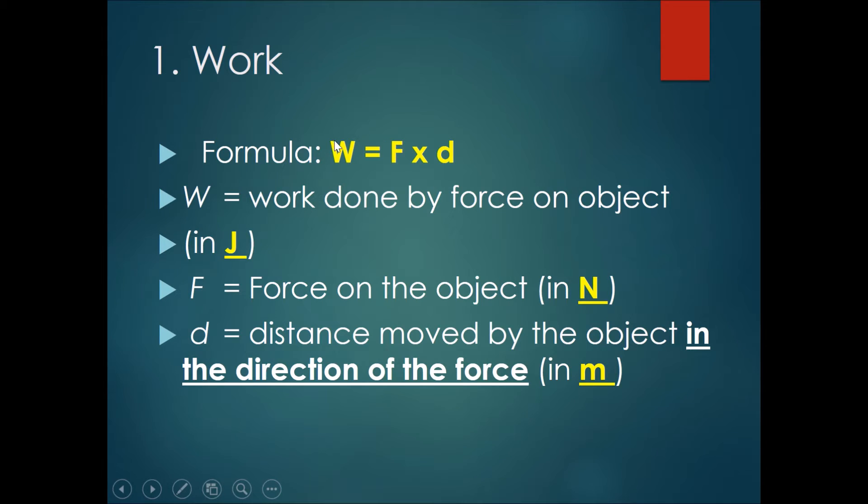For work, the formula is W = F × d. Work done equals force times the distance moved in the direction of the force. W is the work done by the force, F is the force on the object, and d is the distance moved by the object in the direction of the force.